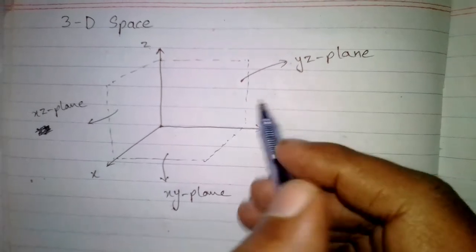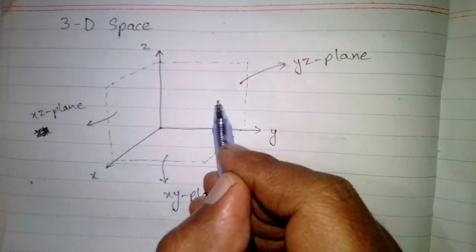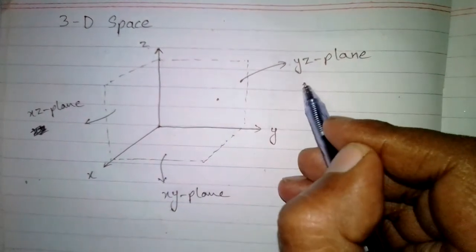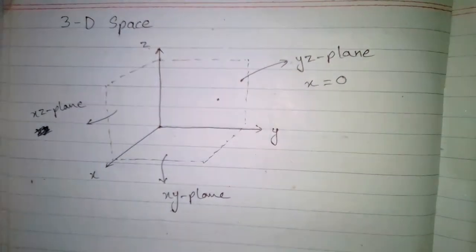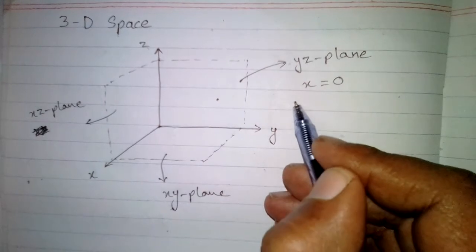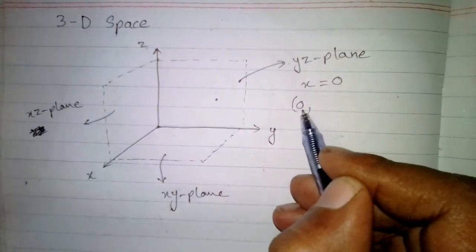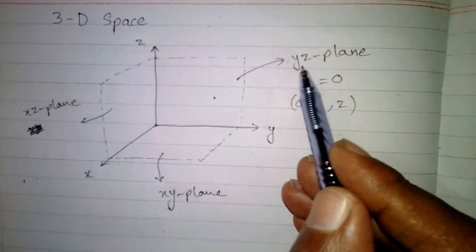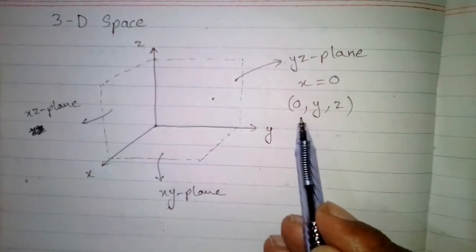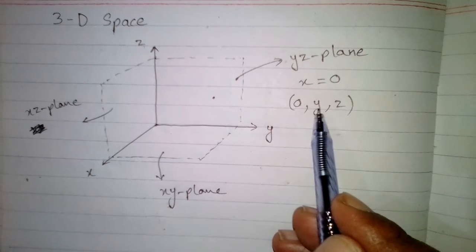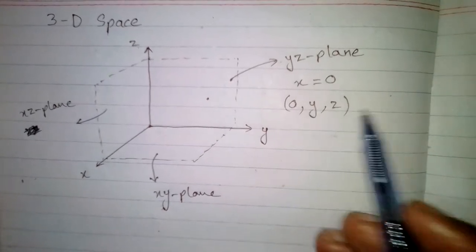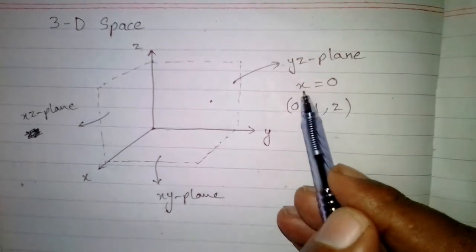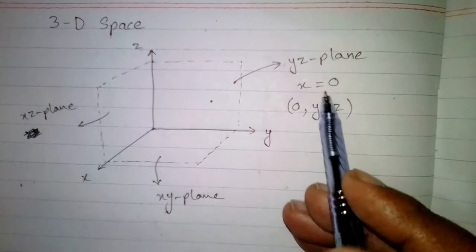If we take any point on the YZ plane, this point has an X component equal to zero. We can write zero in place of X, so the point on the YZ plane is of the form (0, y, z), because Y and Z can have any value, but X is always equal to zero. This equation X equals zero is also the equation of the YZ plane.